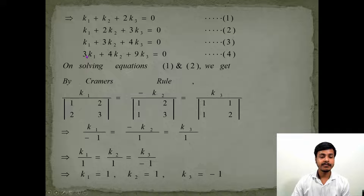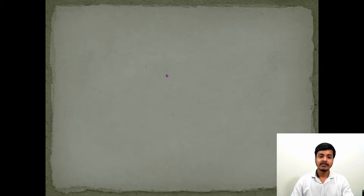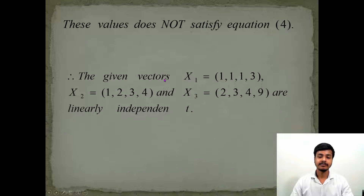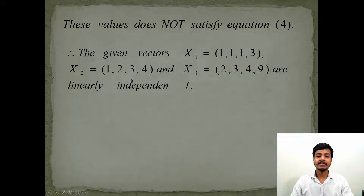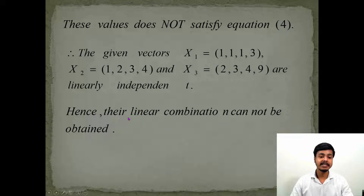Now check equation 4: 3×k1 + 4×k2 - 9×k3 gives 3 + 4 - 9 = -2, which is not equal to zero. So these values do not satisfy equation 4. Since the values do not satisfy equation 4, we conclude that the given vectors are linearly independent. Since the vectors are linearly independent, we cannot find a linear combination between them — write the sentence: 'Their linear combination cannot be obtained.'